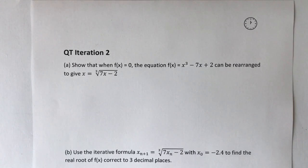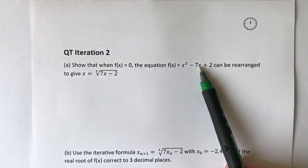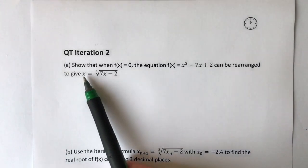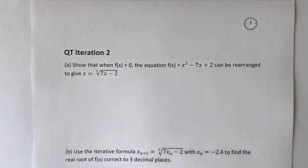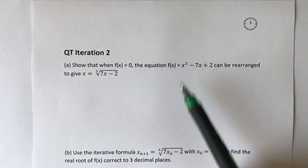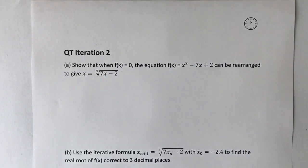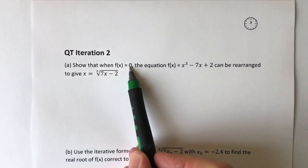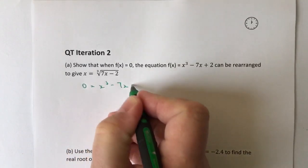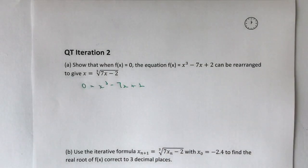What we're saying here is: show that when f(x) equals 0, the equation can be rearranged to give that. Basically what we're doing is trying to make either this value of x or this value of x the subject of the formula to give x equals something. Because this is cubed, it's actually this x that we're going to make the subject. So when f(x) is 0, we can write this as 0 equals x cubed minus 7x plus 2. And then it's just a case of manipulating this to get x to be the subject.